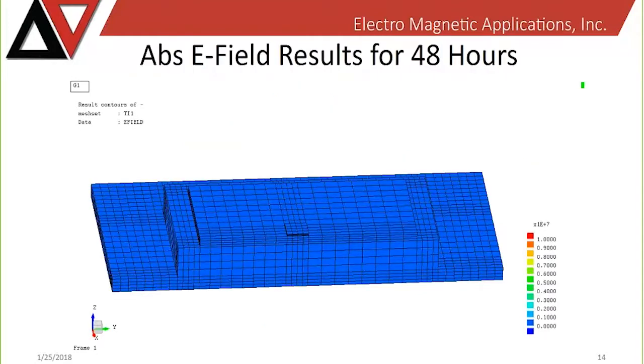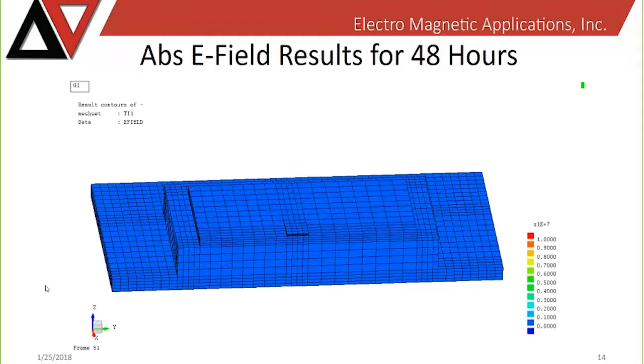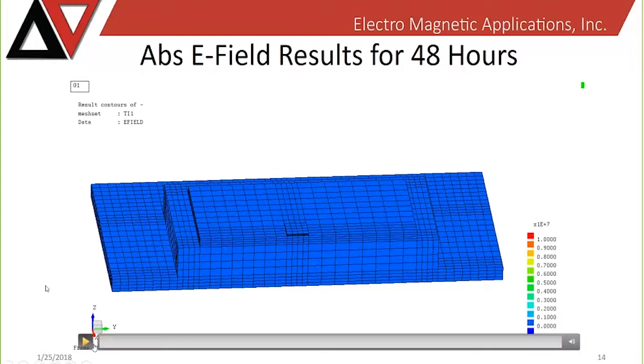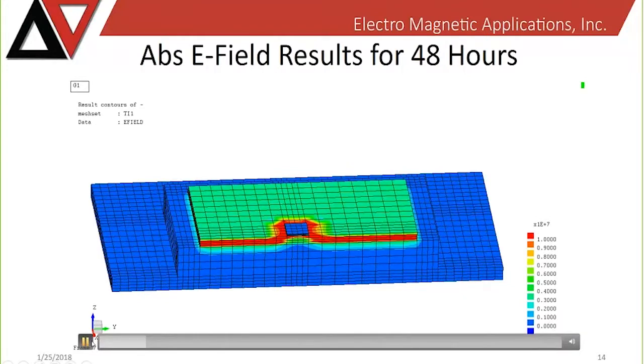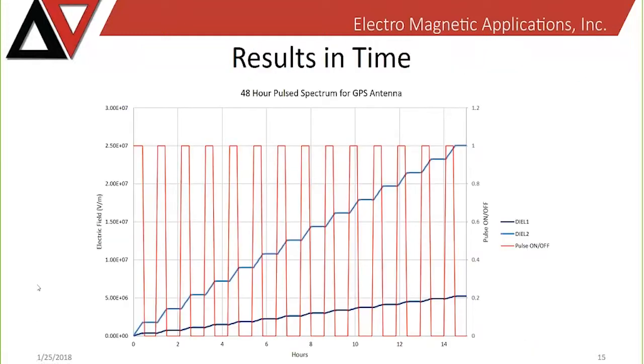So, then what I did here is this is the electric field results for the 48 hours. I cut into the antenna so we can see a cross-section of it just before the metal patch, kind of below it. So, you can see how the electric field develops and how it's different underneath the patch versus other portions of the material. You can see how far into the upper dielectric that high electric field penetrates as well as the lower dielectric.